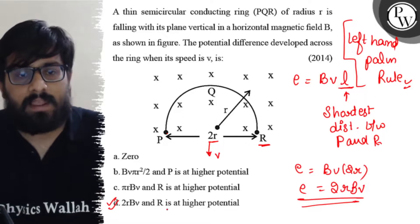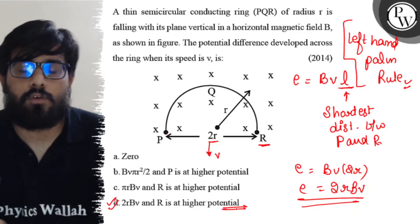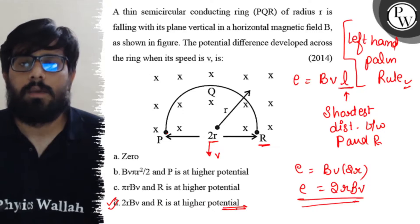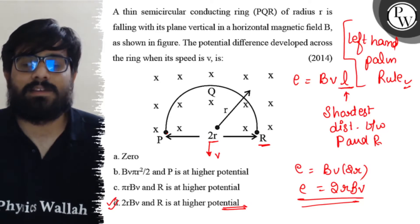Therefore, 2rBV and R is at higher potential. The fourth option is correct. I hope you understood the concept of this question. All the best.